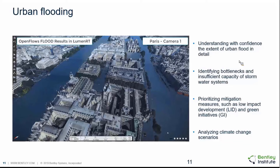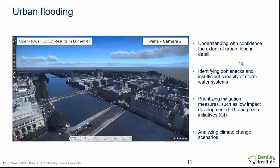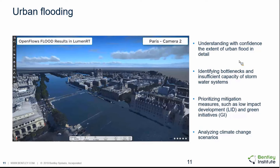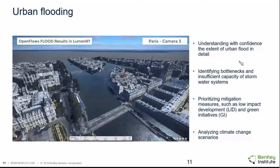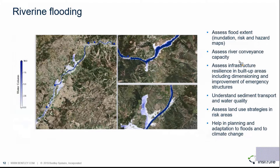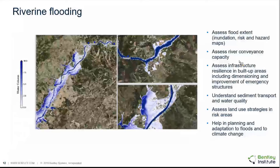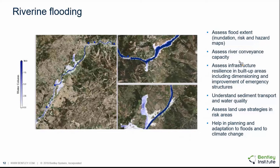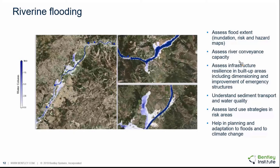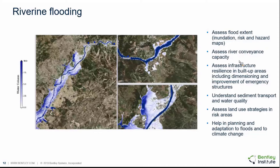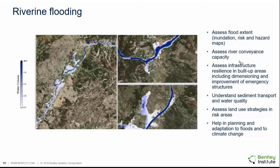In terms of applications, OpenFlows Flood can be applied for urban flooding — to understand flood extent in a city and identify bottlenecks and insufficient capacity of stormwater systems. We can help prioritize mitigation measures and use low impact development strategies, green initiatives, and climate change scenarios. Additionally, we can use OpenFlows Flood for riverine flooding, assessing the flood extent of the floodplain, river conveyance capacity, and infrastructure resilience in built-up areas, and then help dimension and improve emergency structures and protection structures.